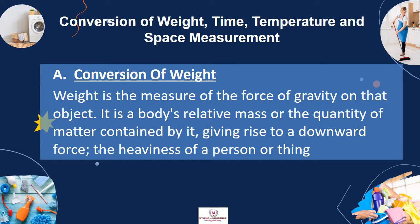Conversion of Weight, Time, Temperature, and Space Measurement. Letter A: Conversion of Weight. Weight is the measure of the force of gravity on an object. It is the body's relative mass or the quantity of matter contained by it, giving rise to a downward force — the heaviness of a person or a thing.